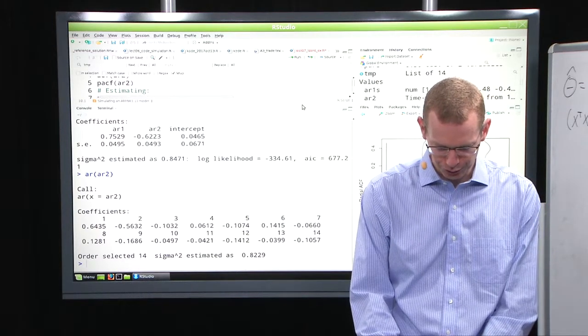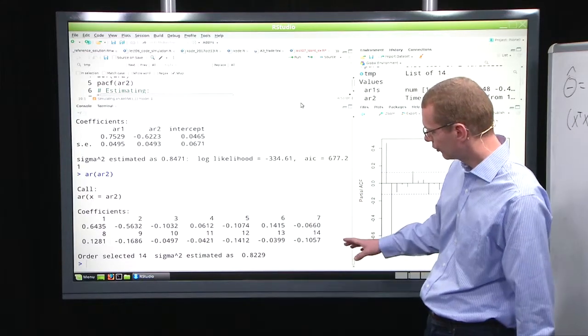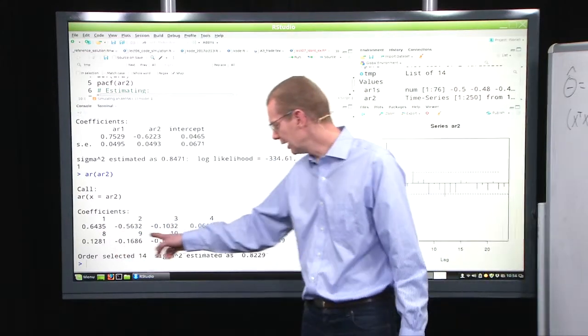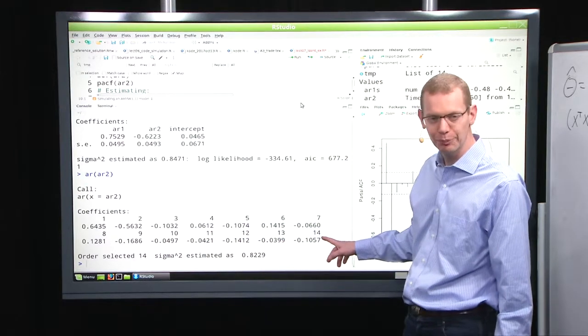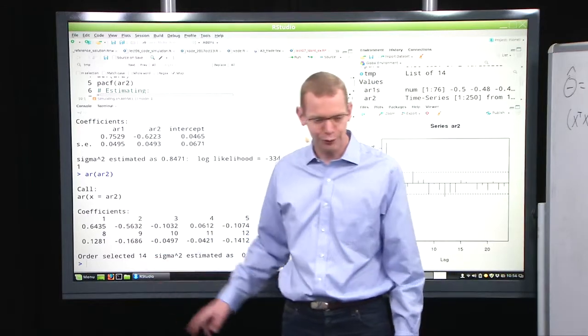Now, if I do the AR call instead, what it gives me for default is that it will use the AIC criteria to select a model that is the best model. And it ends up giving me an AR14, simply because AIC often has preference for greater models.